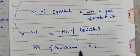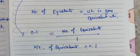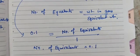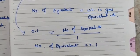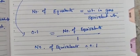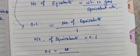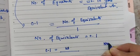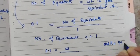And when you put this 0.1 into this formula, second formula, so what we get 0.1, weight, let's suppose that is W, weight in grams, divided by equivalent weight. For NaOH, the equivalent weight is 40.